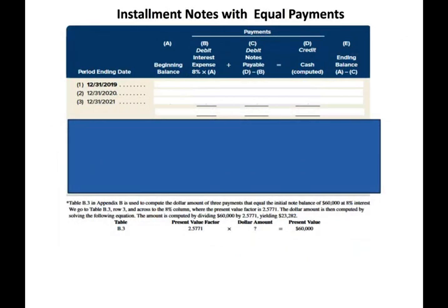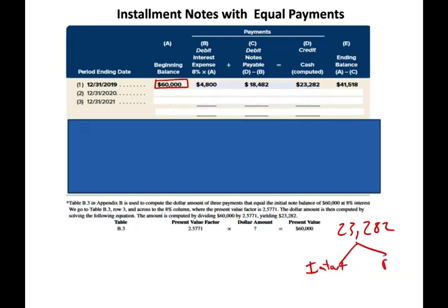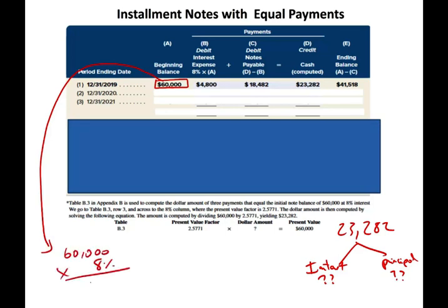You have to prepare a loan amortization schedule. On 12/31 you took out the loan of $60,000. You're going to make a payment of $23,282, of which some is interest and some is principal. To find the interest, take the book value of the loan at the beginning of the period — $60,000 — multiply by 8%, giving $4,800 of interest. The remaining $18,482 is principal reduction.